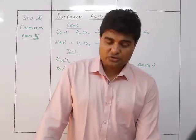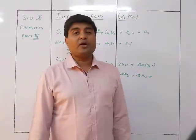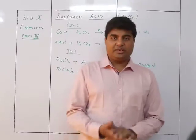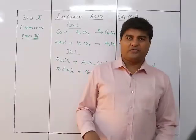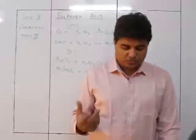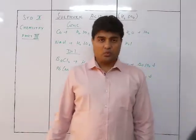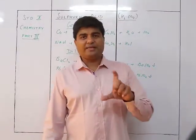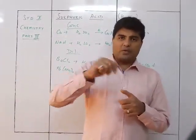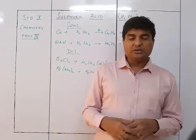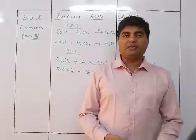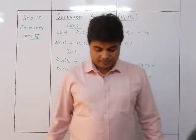To identify sulfuric acid among three unknown acids, take a test tube of BaCl₂ solution and add each acid separately. The one that gives a white precipitate is sulfuric acid.